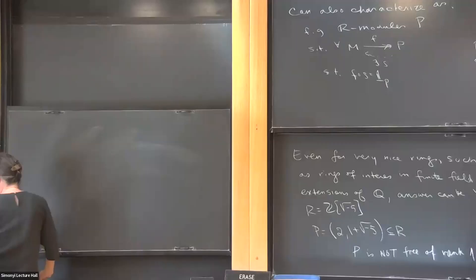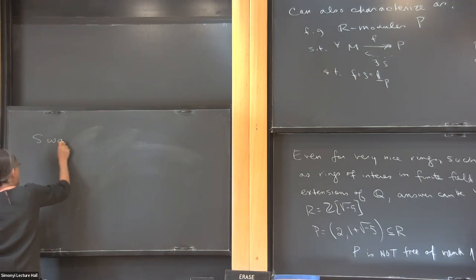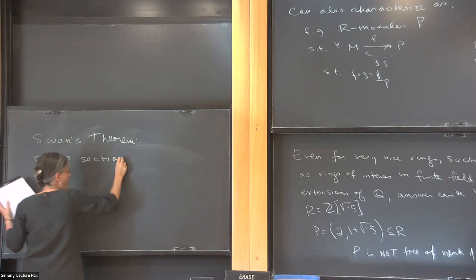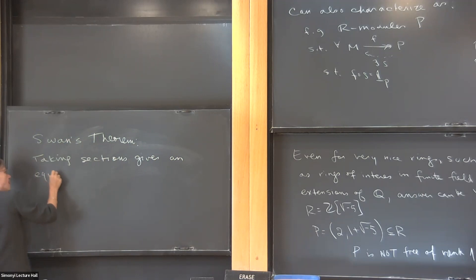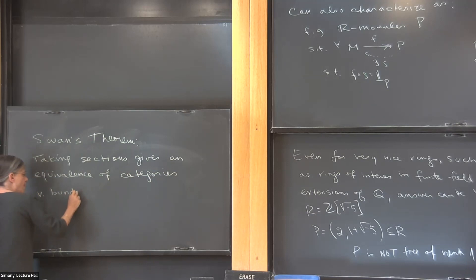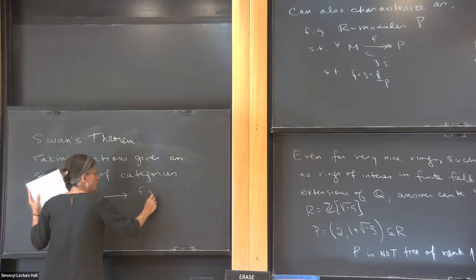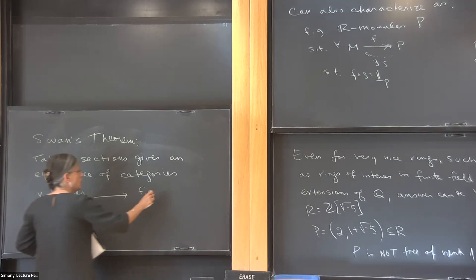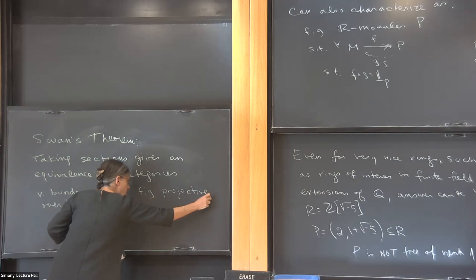So we have Swan's theorem: taking sections gives an equivalence of categories from vector bundles over X to finitely generated projective C(X)-modules.